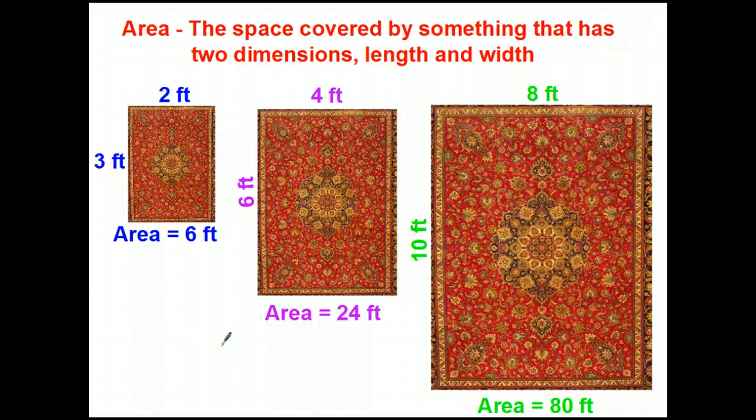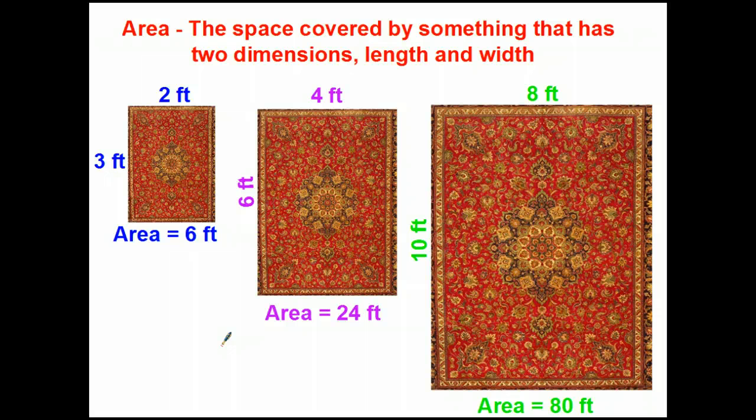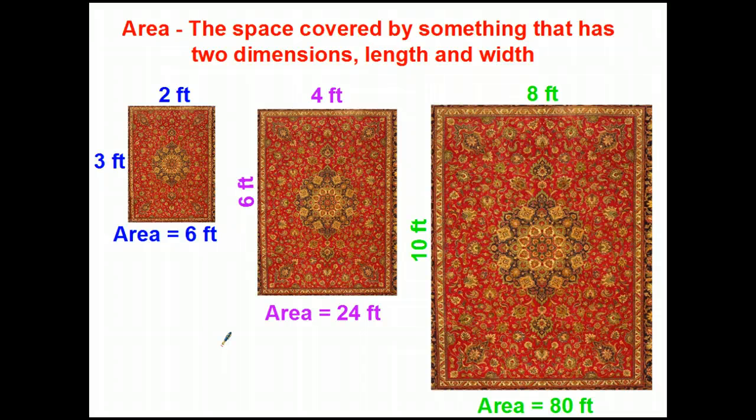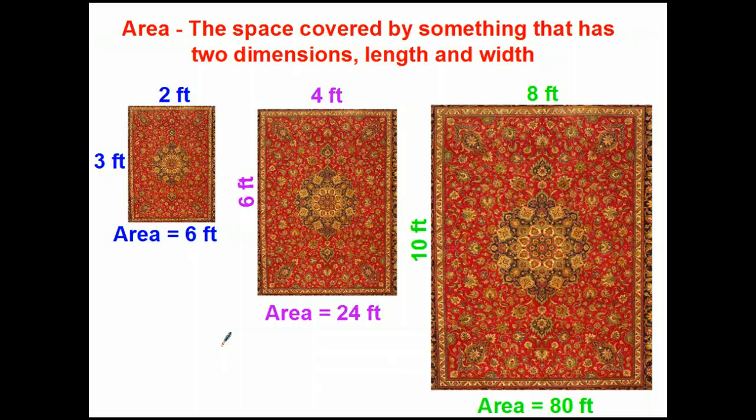Now take a look at the medium sized rug. In this case, it's a 4 foot wide rug and a 6 foot long rug. It's 4 by 6 feet. It has an area of 24 feet. So ask yourself, how are 6 and 4 and 24 related?